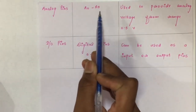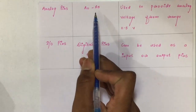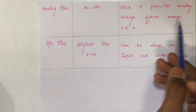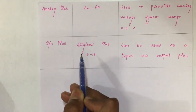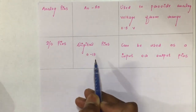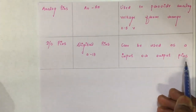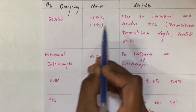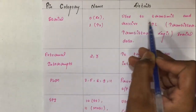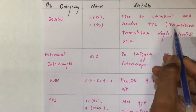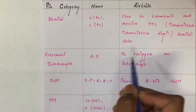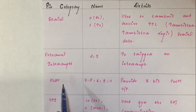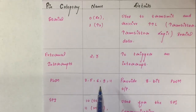Analog pins: there are total 6 analog pins from A0 to A5, which are used to provide analog voltage ranging from 0 to 5V. Input-output pins: there are total 14 digital input-output pins ranging from 0 to 13, which can be used as input or output pins. Serial pin 0 RX and 1 TX is used to transmit and receive TTL — transistor-transistor logic — serial data. External interrupts 2 and 3 are used to trigger an interrupt. PWM, or Pulse Width Modulation, pins 3, 5, 6, 9 and 11 provide 8-bit PWM output.